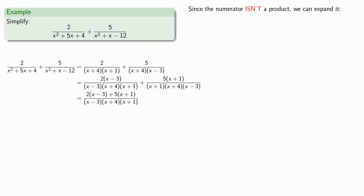Since the numerator isn't a product, we can expand it. So we'll take our numerator, 2 times x minus 3 plus 5 times x plus 1. We'll expand and simplify.